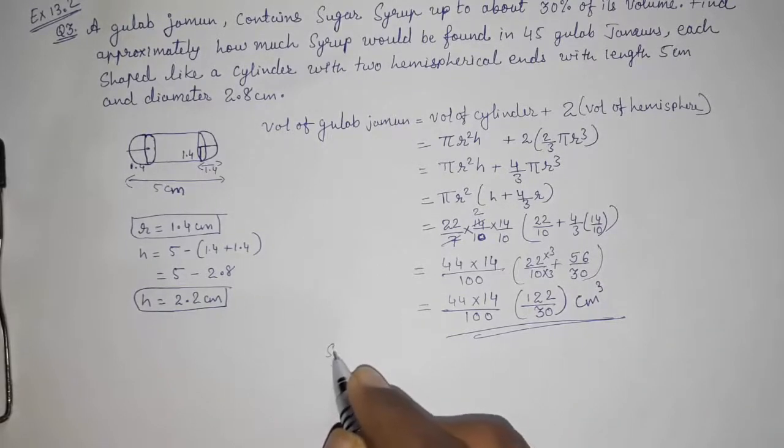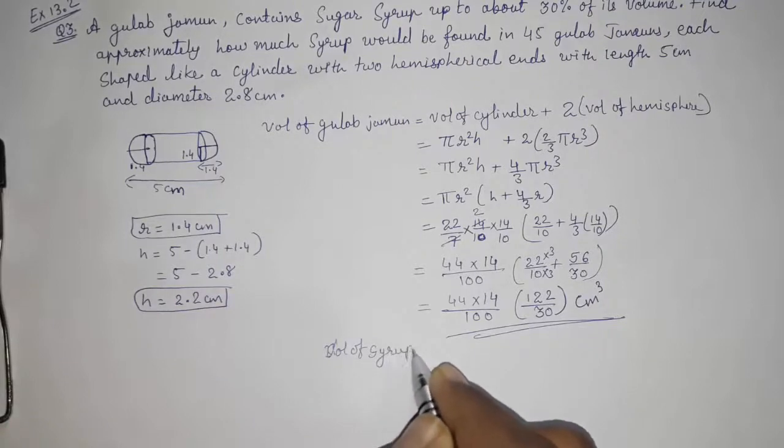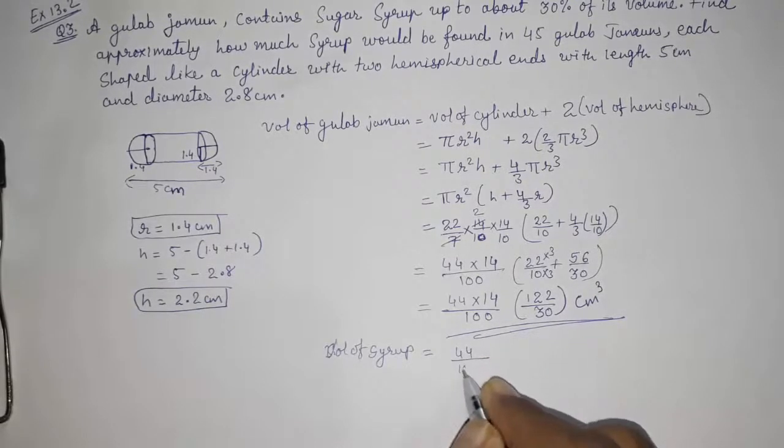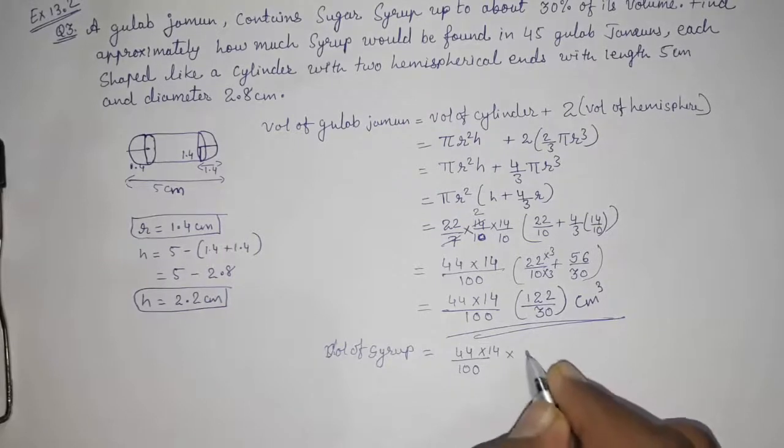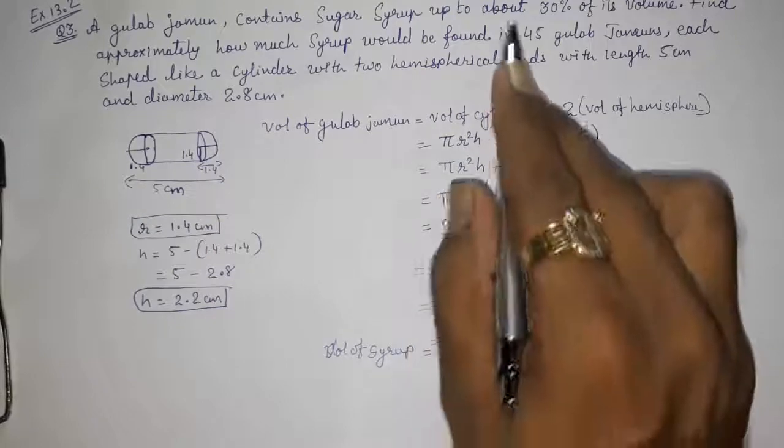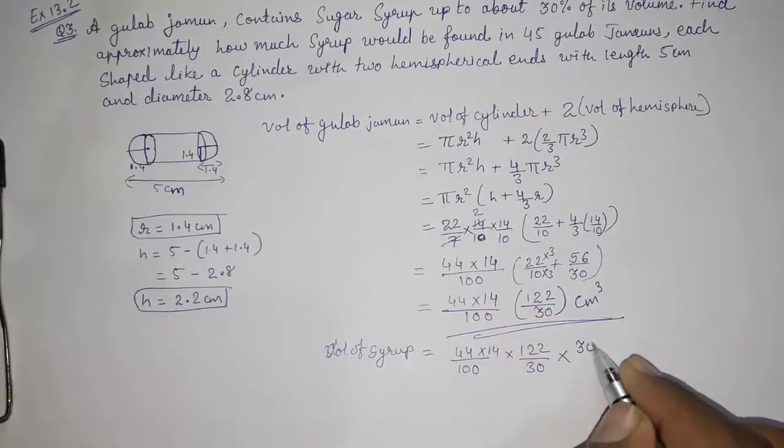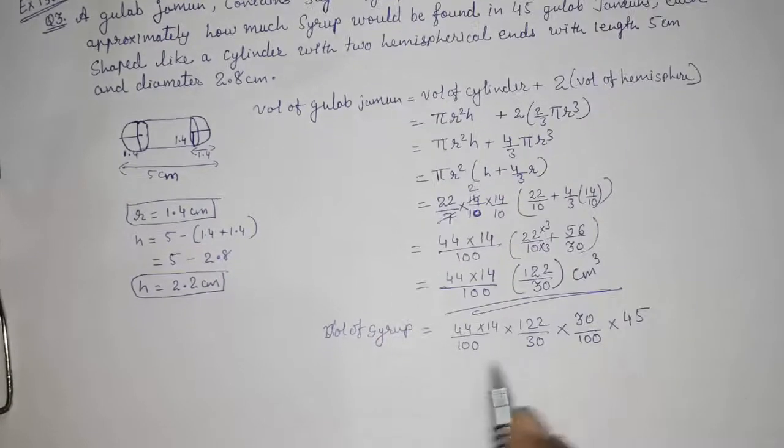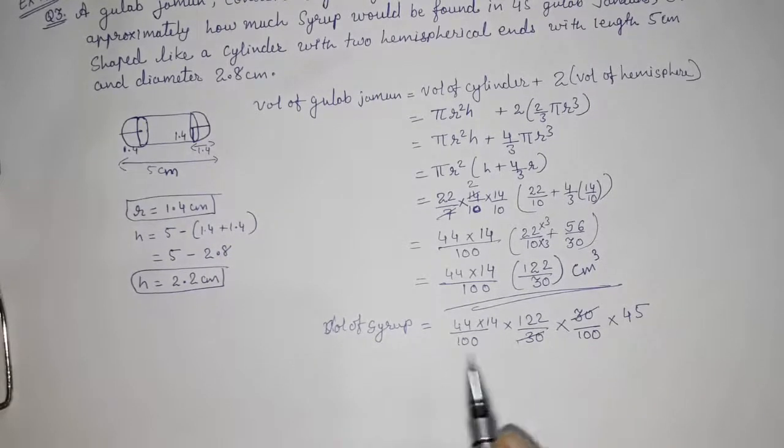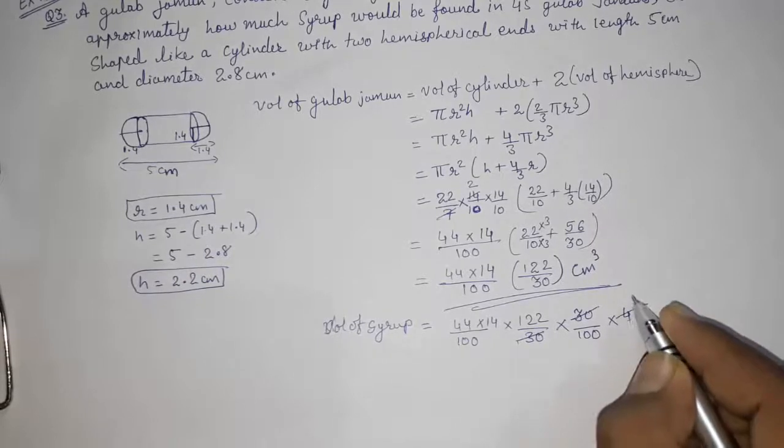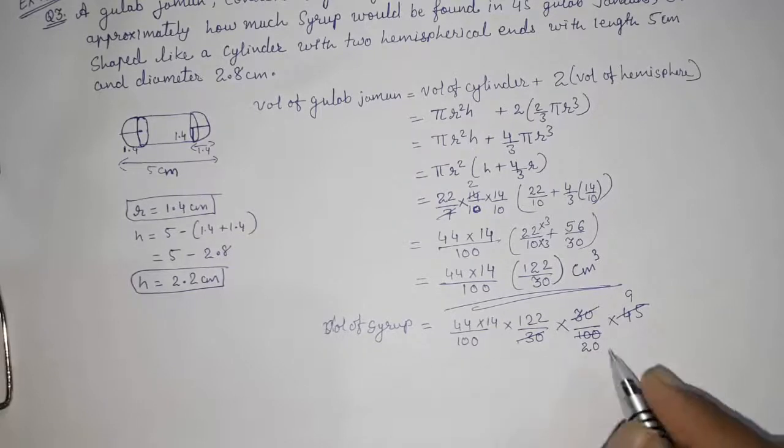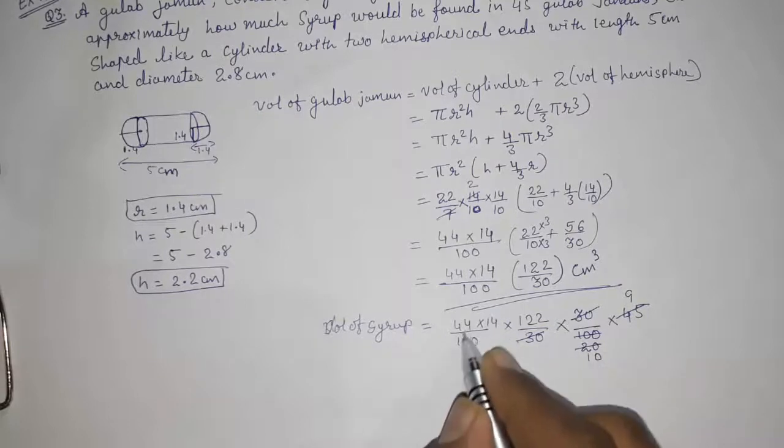Directly, volume of syrup is equal to 45 gulab jamuns, 44/100 into 14 into 122/30. We want 30% so directly it will be 30/100 and 45 gulab jamuns are there, so multiply with 45. We can cancel this 30, 30. Still we can cancel if we want to, I think 5, 9, 5, 20. Still if we want to we can cancel this 2, 10, 2, 22.